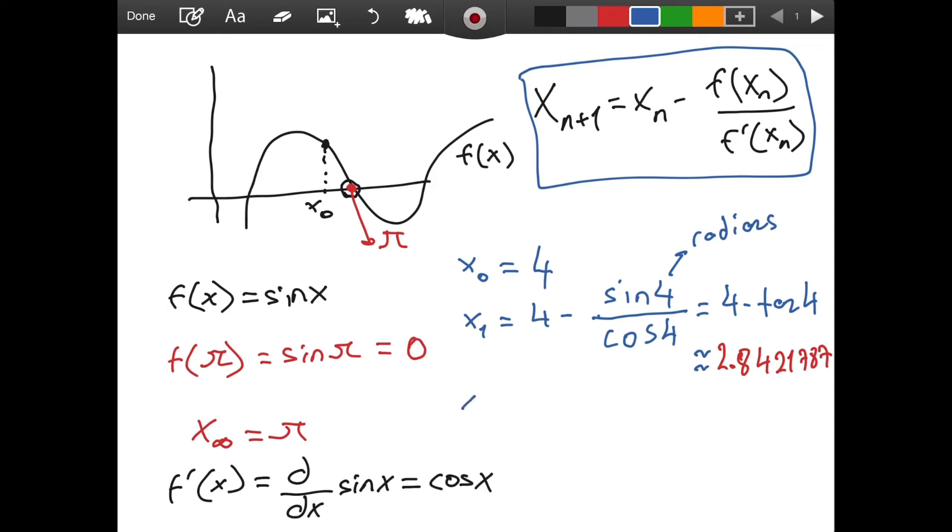Now if we use the x1 value to find our x2 value, then we will simply have x1 minus tangent of 2.844217887. If we do this, we now get, just like I said, we now get a closer value: 3.150087. And let me do x3 on the new page.